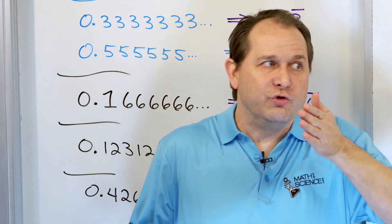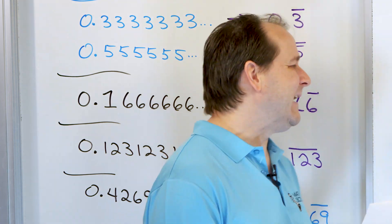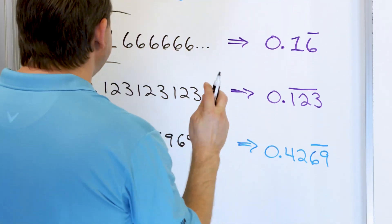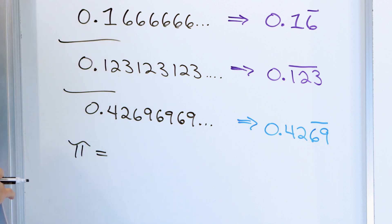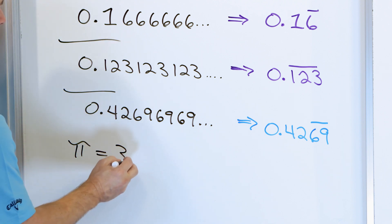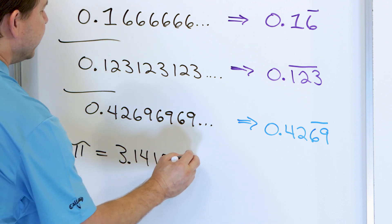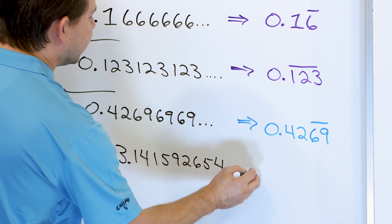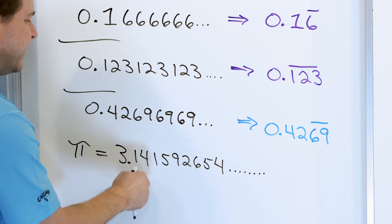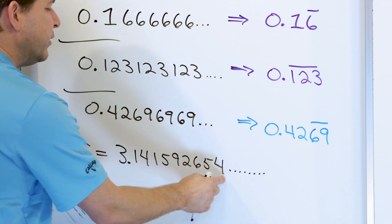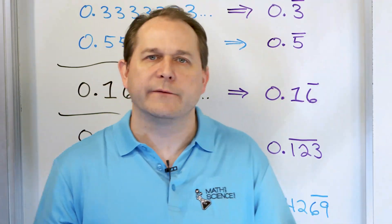We'll learn later that some numbers go on and on forever but don't have any pattern. The most famous number is pi. Pi, which relates to geometry, is 3.141592654... but there's no pattern. If you calculate pi, notice these numbers don't repeat — there's no pattern to it. They go on and on forever with no pattern. Mathematicians have used supercomputers to calculate pi to millions of decimal places, and no pattern can be found.